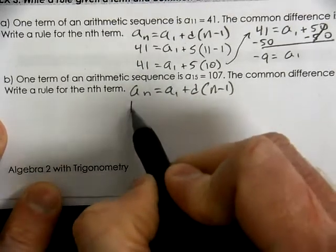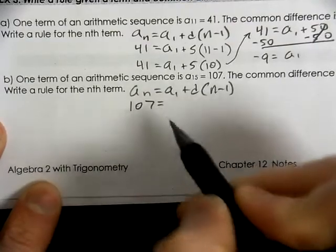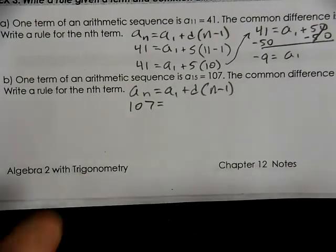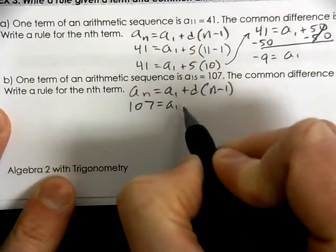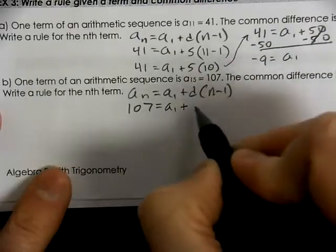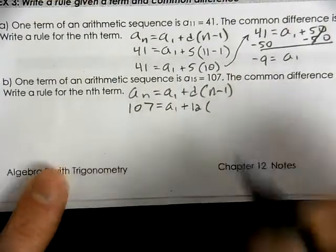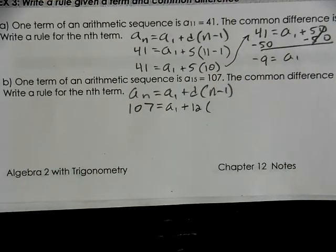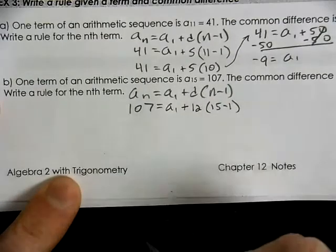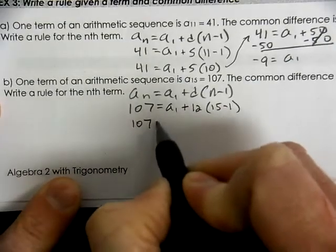What number goes in for a of n? That's our final result of 107. What is our first term? That's what we're looking for. What is our common difference? That's the 12. How many terms does it take to get the 107? 15 minus 1. Then we can start to clean this up.